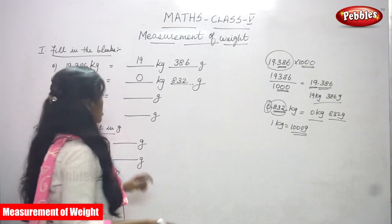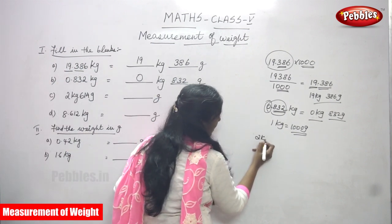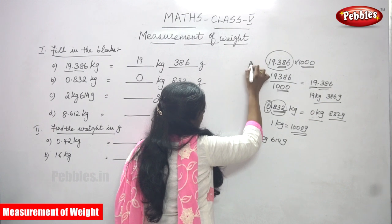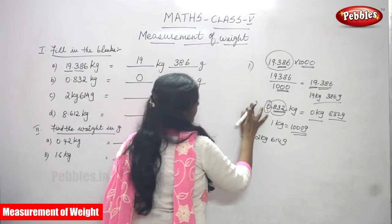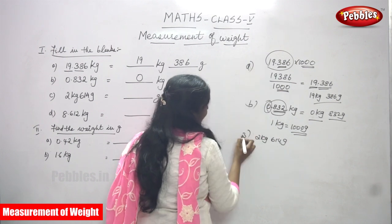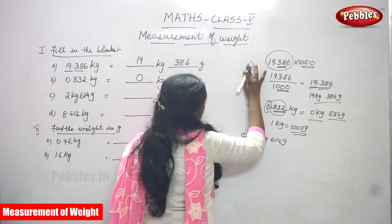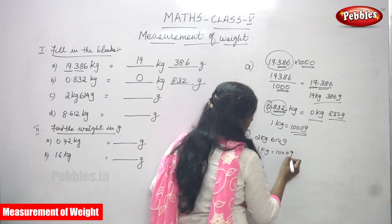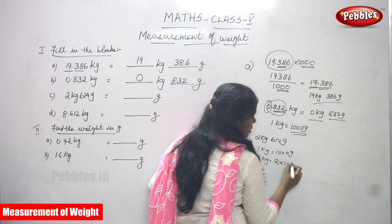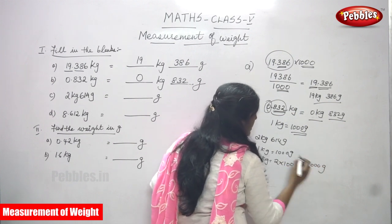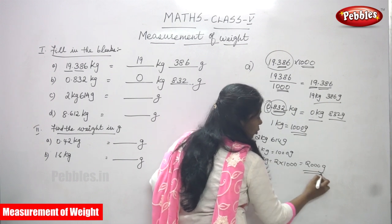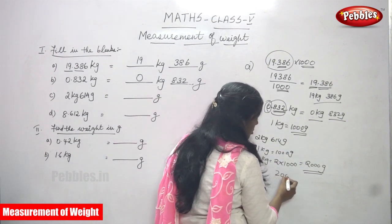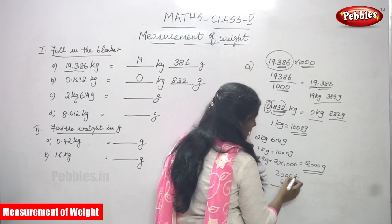Now the third question: 2 kilogram and 614 gram — convert the entire thing into gram. One kilogram equals 1000 gram, so two kilogram means 2 into 1000, which gives 2000 gram. The remaining 614 gram stays as it is.